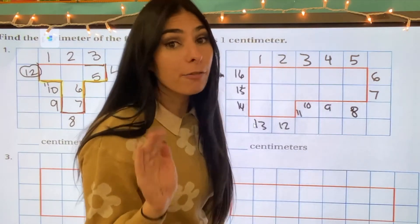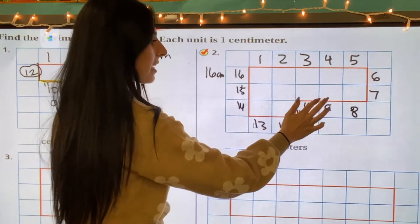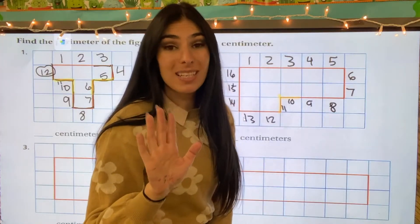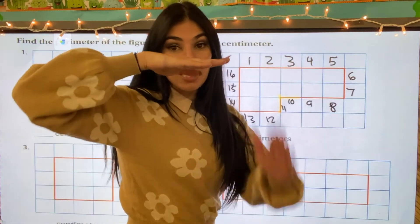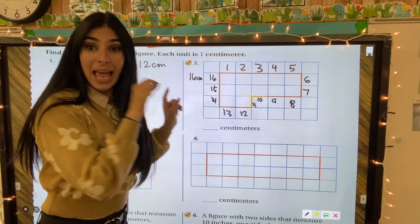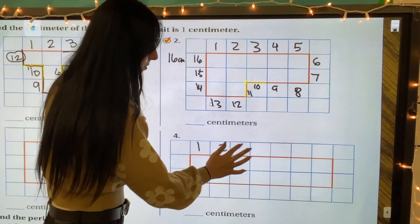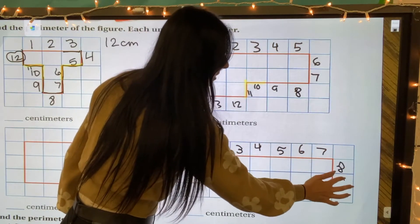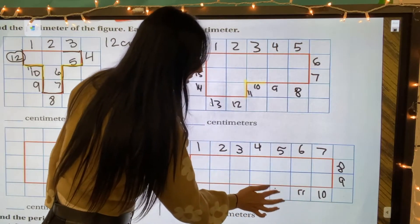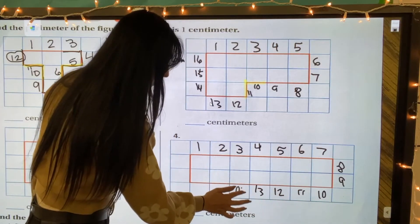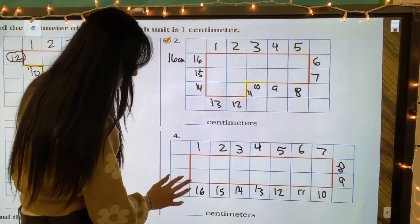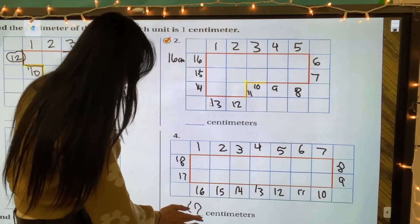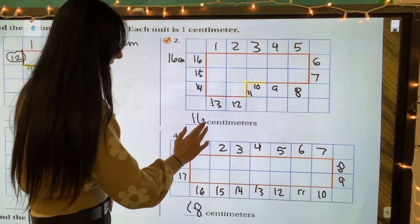Our tricky spot — what we need to be careful for is that corner right here. We have ten and eleven. Just because it's the same square does not mean it is just one number. We need to count both corners. One, two, three, four, five, six, seven, eight, nine, ten, eleven, twelve, thirteen, fourteen, fifteen, sixteen, seventeen, and eighteen. So we have eighteen centimeters. And this one I should write right here: sixteen centimeters.